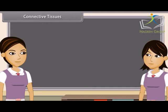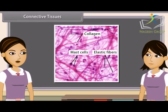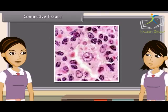Connective tissues bind different organs and parts of various organs together. The cells of connective tissues are living, separated from each other and very few in numbers. Gel-like intercellular substance called matrix forms the main bulk of the connective tissue. Matrix is fibrous in nature and binds other tissues.